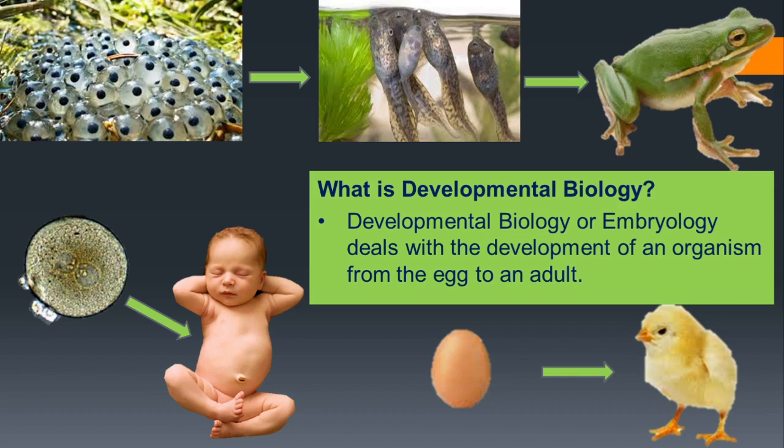All organisms start their development from a single cell called zygote. During development, the zygote undergoes different cleavages or cell divisions and different tissues, organs and organ systems are formed. The embryo passes through different stages and finally the complete adult organism is formed. The study of this transformation of the single-celled zygote to the adult organism is called developmental biology.